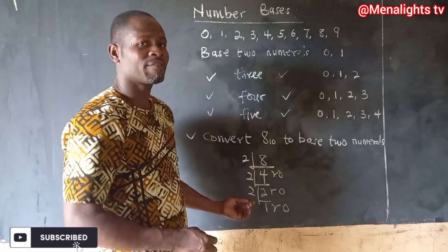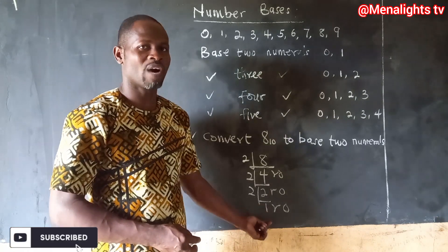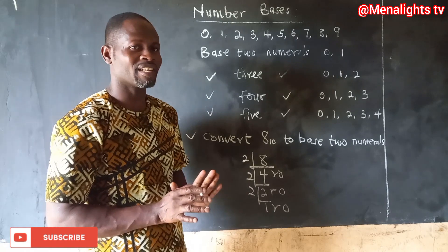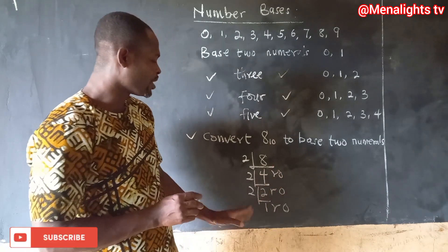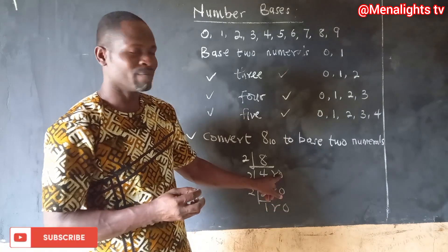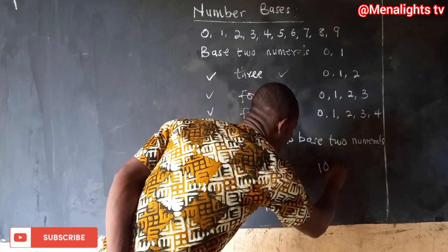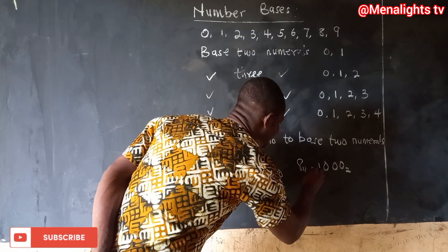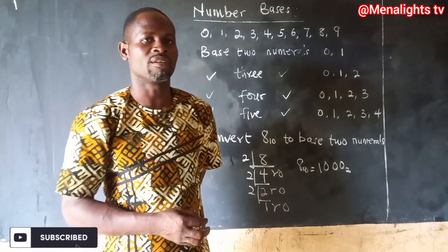Since two cannot divide one, we stop there. We read the remainders from the bottom to the top, giving us one zero zero zero. So 8 in base 10 is the same as 1000 in base two.